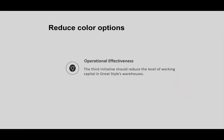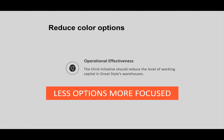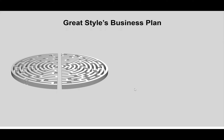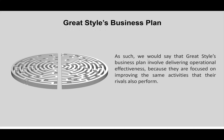The third initiative should reduce the level of working capital in the Great Style warehouse. With fewer color options, inventory and quantity are less, reducing the cost to the business. Less options means more focus. The Great Style business plan aligns the business to deliver operational effectiveness — but it is still operational effectiveness, because they are focused on improving the same activities that their rivals also perform.